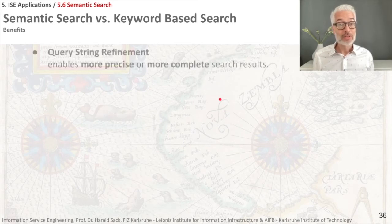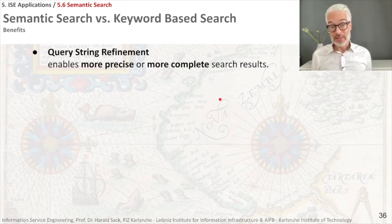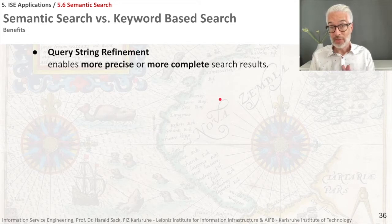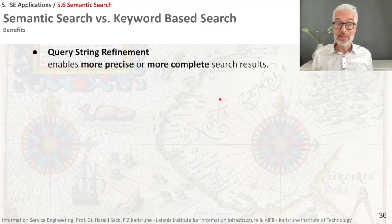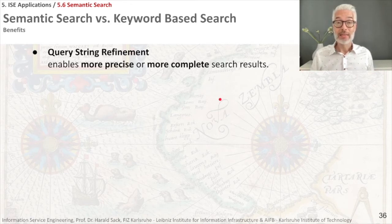Let's have a close look at what's the difference between semantic search and keyword-based search and what might be the benefits. First of all, you can use semantic search or semantic technologies for query string refinement. For example, we had this example where the query string is ambiguous and the search engine then offers you different directions for your results — one direction for each meaning. In the end, this makes your query string more precise. And since here you are not looking for a specific text string but for an entity, your search result will also be more complete because also things mentioned in documents under different names will be found.